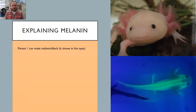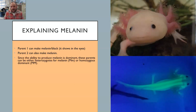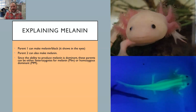Let's start by explaining melanin. Melanin is the ability to make black coloring. Leucistic axolotls can make melanin — it's just restricted to their eyes. So parent number one can make melanin, it shows up in his eyes. Parent two can also make melanin, it shows up in her eyes. So both parents are capable of making melanin. Since they can make melanin and melanin production is dominant, they both have this dominant allele. What we don't know is if they have one copy or two — they may be homozygous dominant (big M, big M) or heterozygous. You can't tell by looking at them.